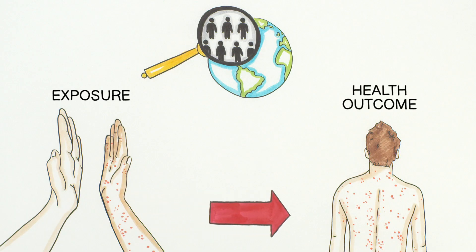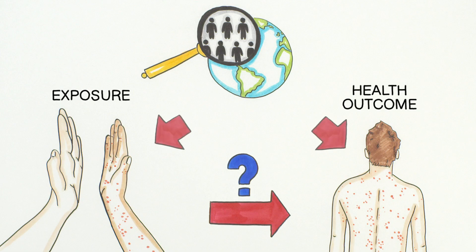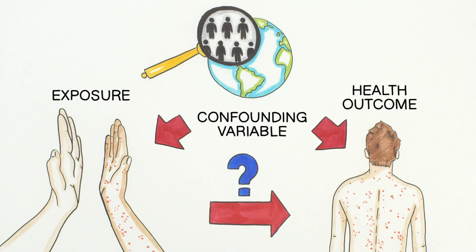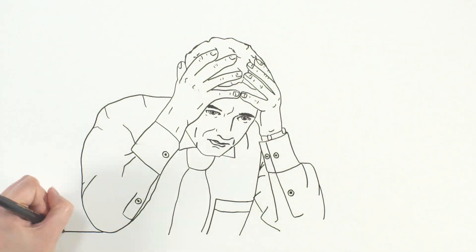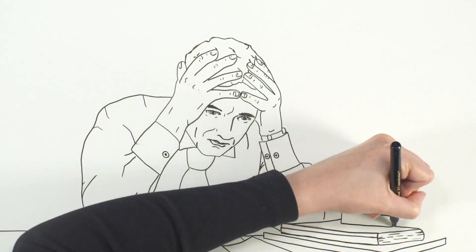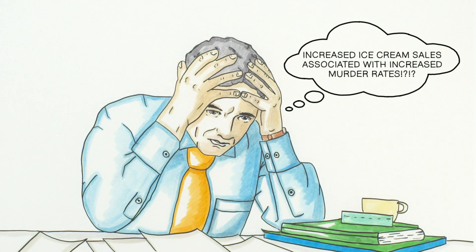If we're not careful, we may incorrectly conclude that a causal association between two factors exists. This occurs because the association we observe is distorted by another factor that we have not considered. We call this distorting factor a confounding variable. Confounding is one of the most important problems in epidemiologic studies because it results in spurious or distorted associations being observed.